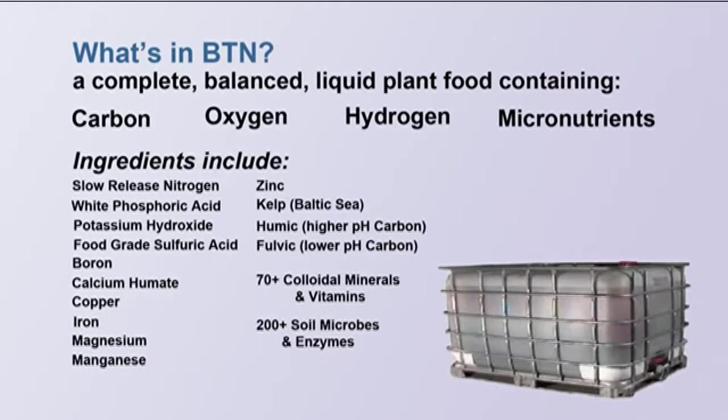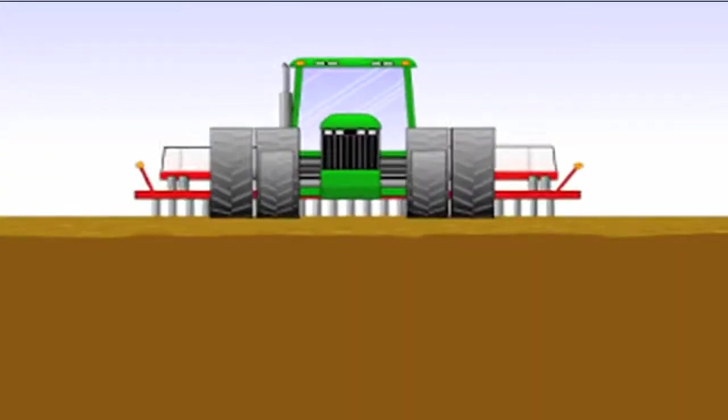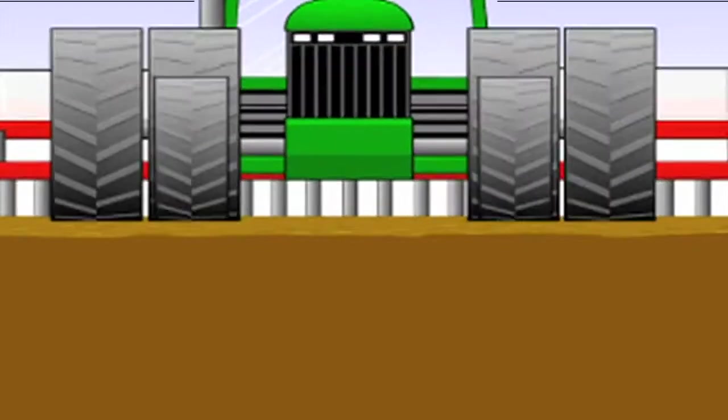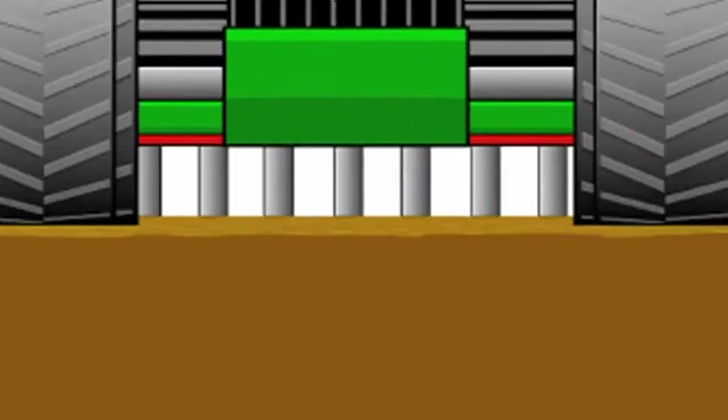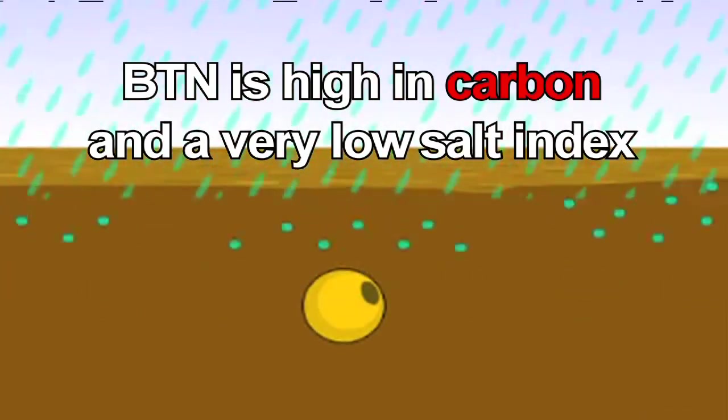Plant-produced carbohydrates are the ultimate food and energy source for plant growth and reproduction. Seeds and young root systems of any type are very sensitive to most high-salt index fertilizers. BTN is high in carbon and has a very low-salt index which aids in early plant growth and development.